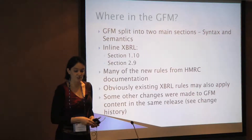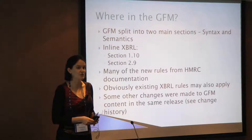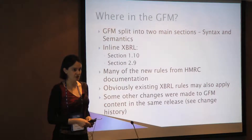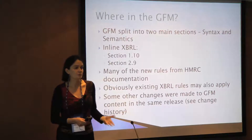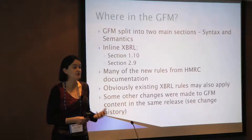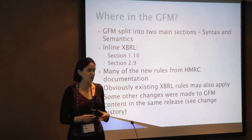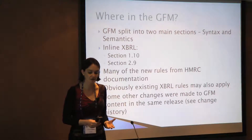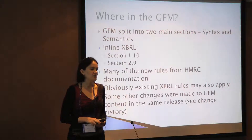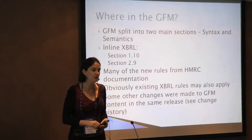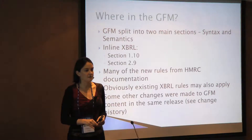The new inline XBRL rules can be found in sections 1.10 and 2.9. If you download the document and look later, that might help you find them more easily. Many of the new rules are from the HMRC documentation. All the rules in the GFM are attributed, so if you look at the bottom you can see which document these rules come from and in which systems. Some of the existing XBRL rules from other filing systems like the SEC and Japan EDINET may still apply to an inline system. In this particular release, there were also other changes made to other rules in the GFM as a result of changes to other systems or suggestions made, and if you're interested in those there should be full details in the change history. It is possible to request a change control version from the IFRS Foundation if you really want to see the detail of what's changed.